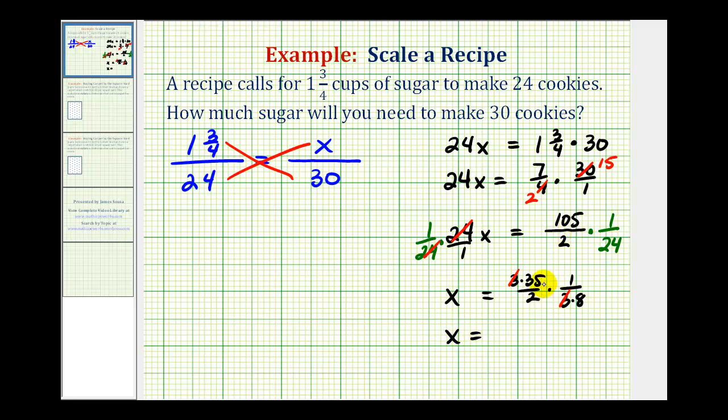So x equals thirty-five sixteenths which is the cups of sugar needed to make thirty cookies.